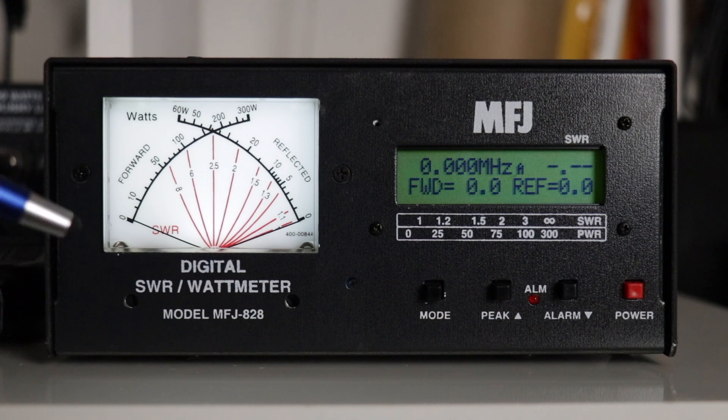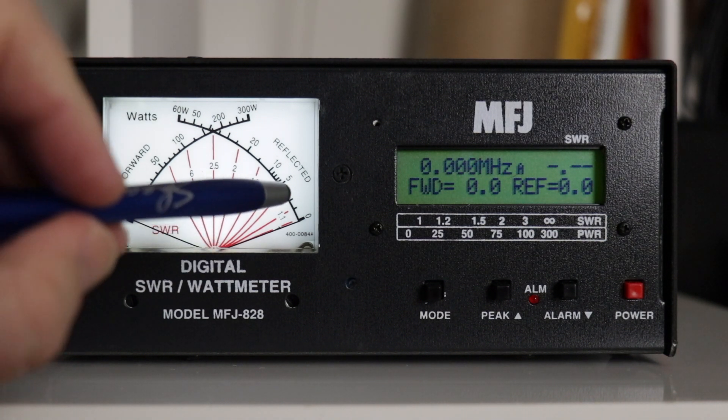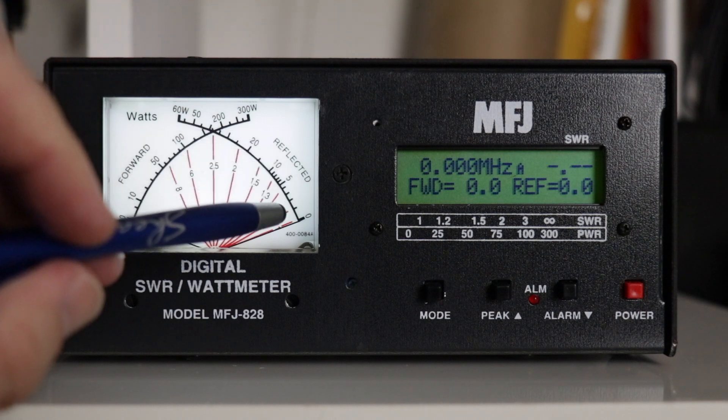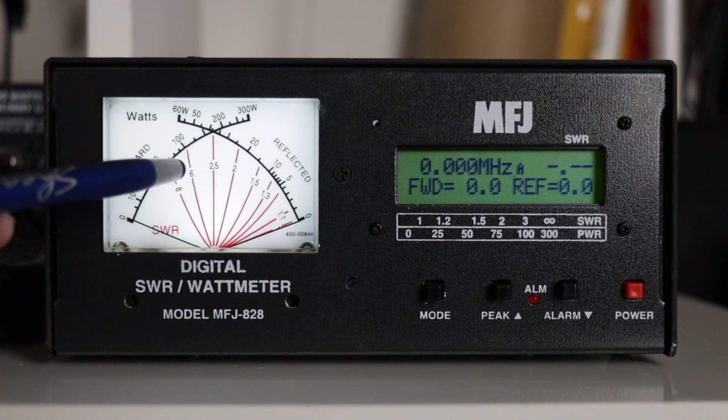This is a cross needle design. The needle coming up this way will do your forward power, the needle going to the right does your reflected, and where they cross is where you'd read your SWR.